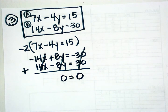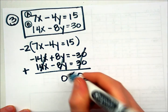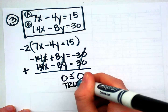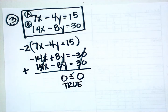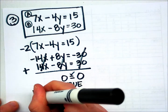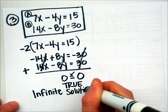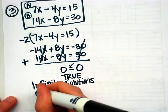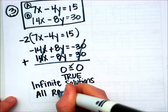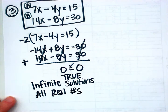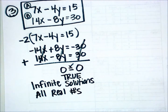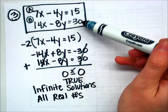If you're left with a true statement — and we know that 0 does in fact equal 0 — then we know a couple of things. First, we know that there are an infinite number of solutions, or another way to say that is that all real numbers are a solution. And since we're dealing with a system, if there's an infinite number of solutions, that also tells me that equation A and equation B are really the same line.